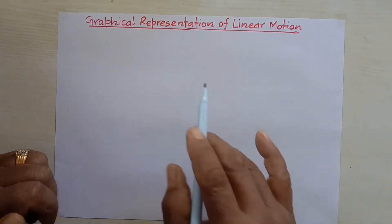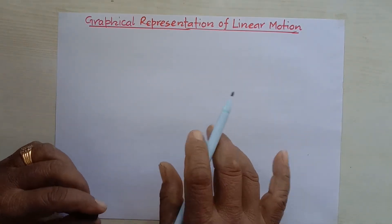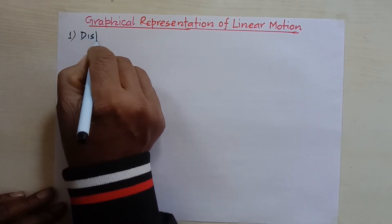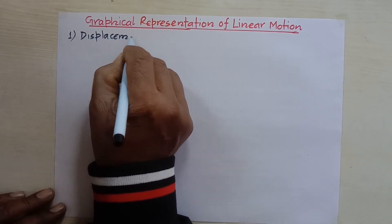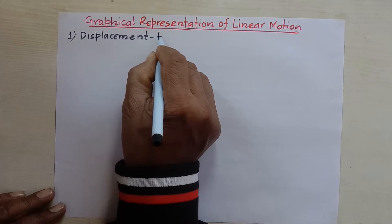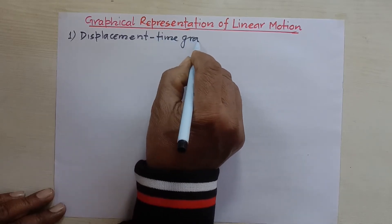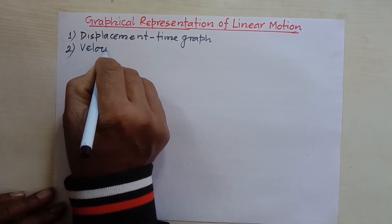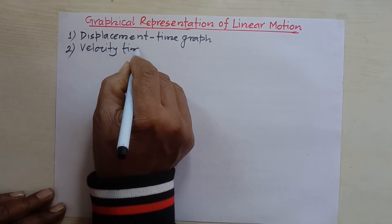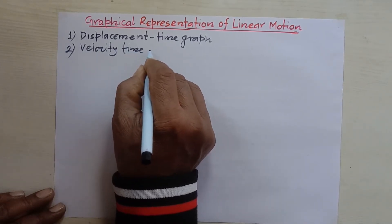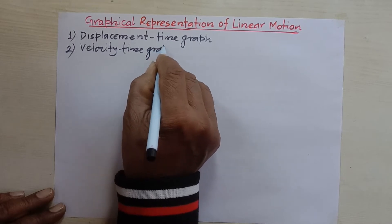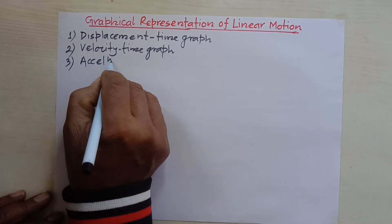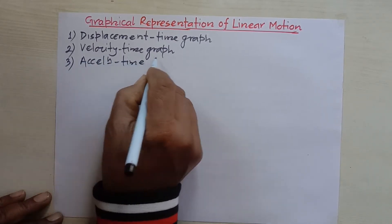There are three different ways with which we can represent the motion of a body graphically. Number one: displacement-time graph. Another graphical method is velocity-time graph, and another method is acceleration-time graph. These are three methods.